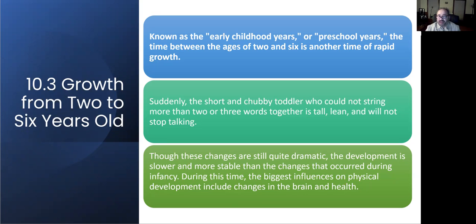Right after the two-year span, their body begins to grow fast — they don't stop talking, they start to have tantrums and make their voice heard. Though these changes are still quite dramatic, the development is slower and more stable than the changes that occurred during infancy. During this time, the biggest influences on physical development include changes in the brain and health.